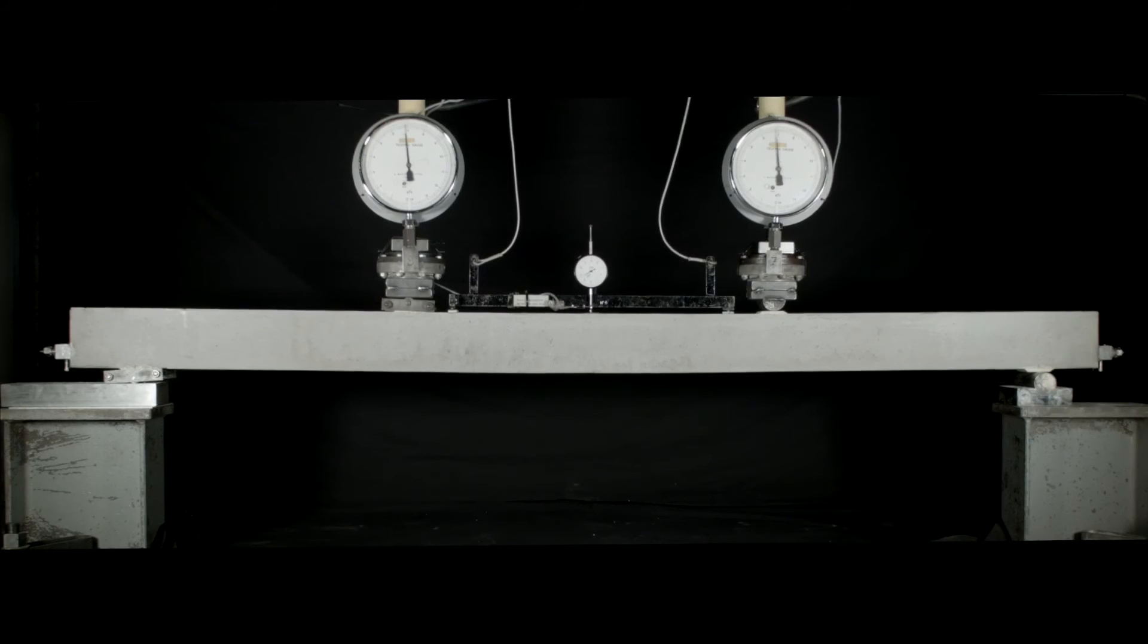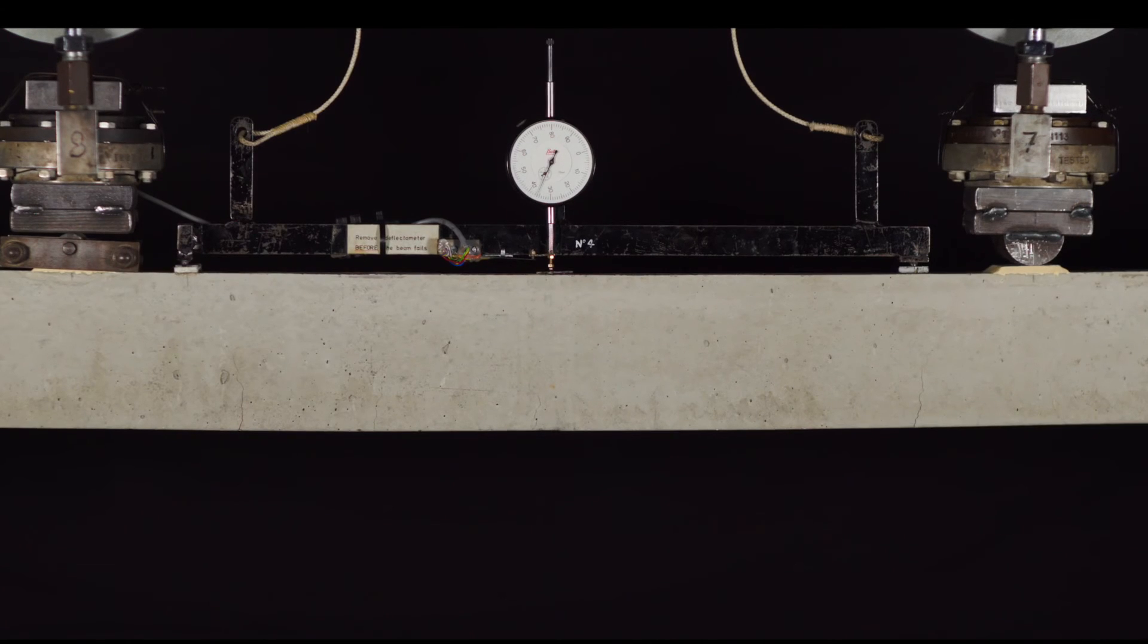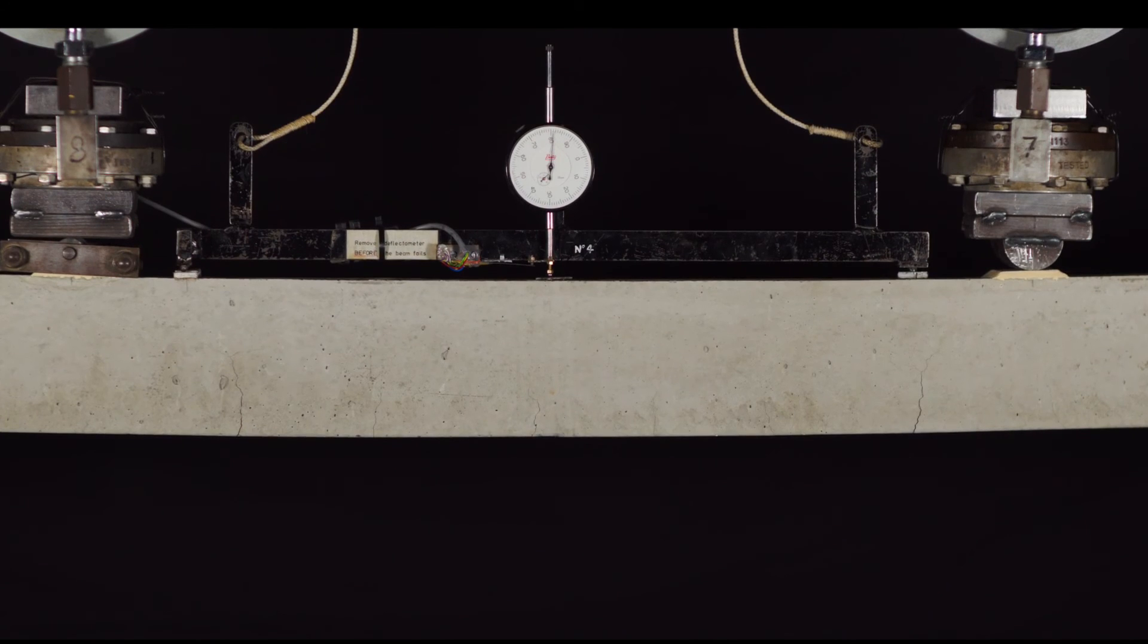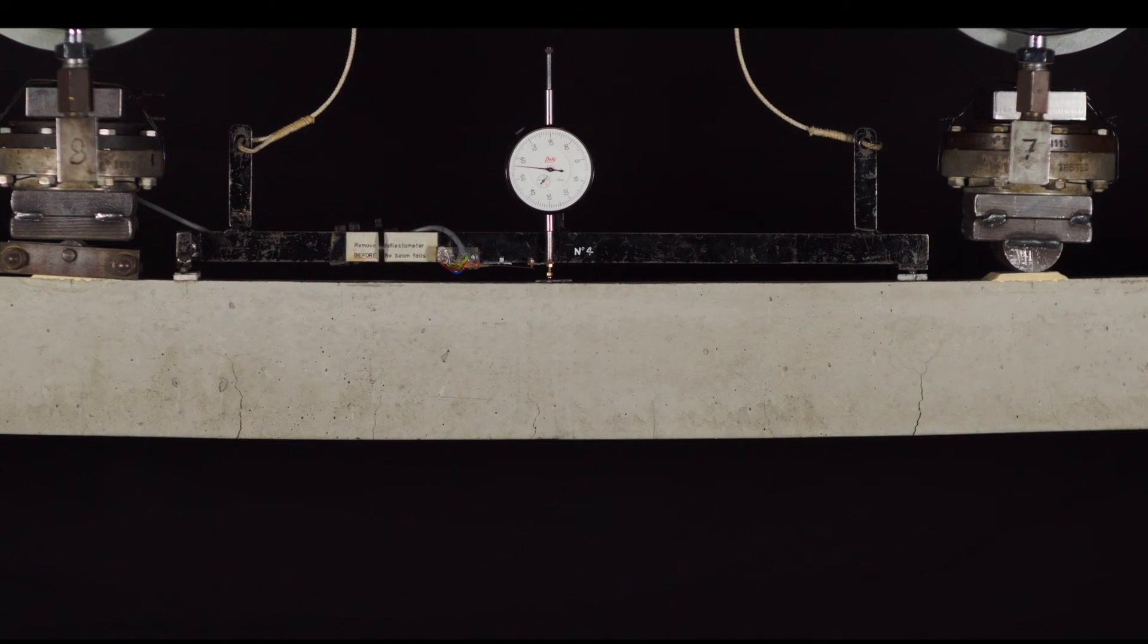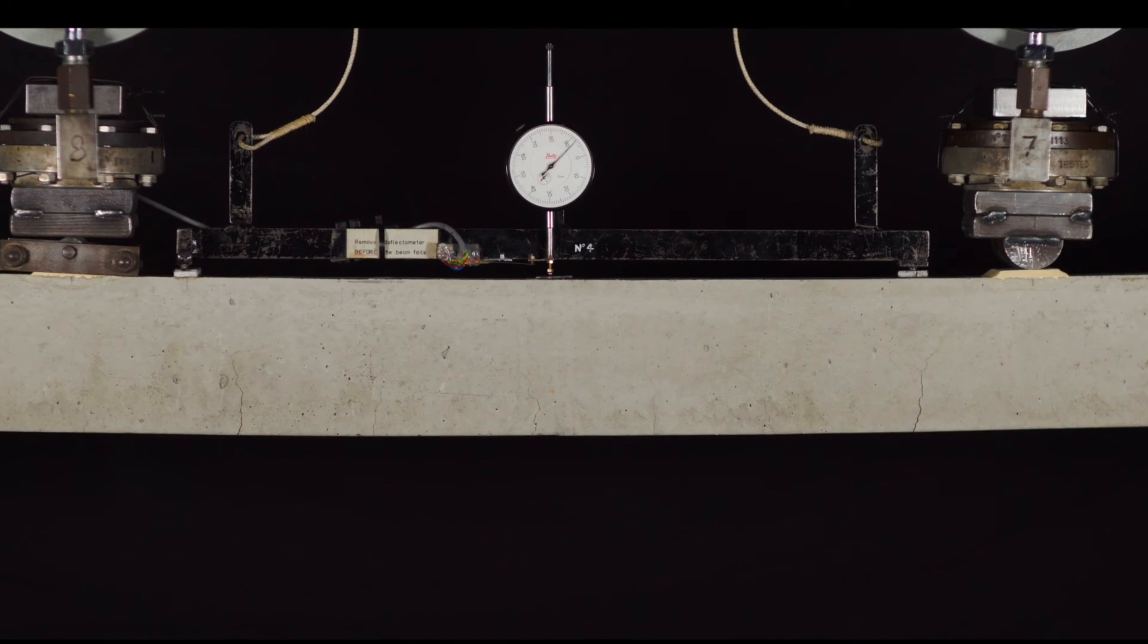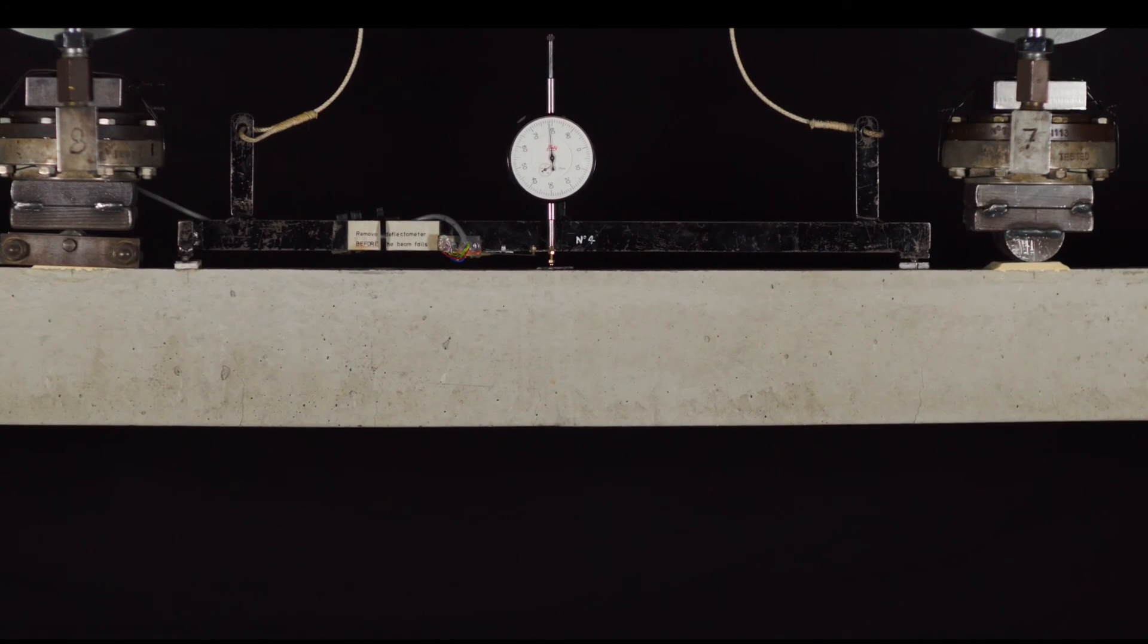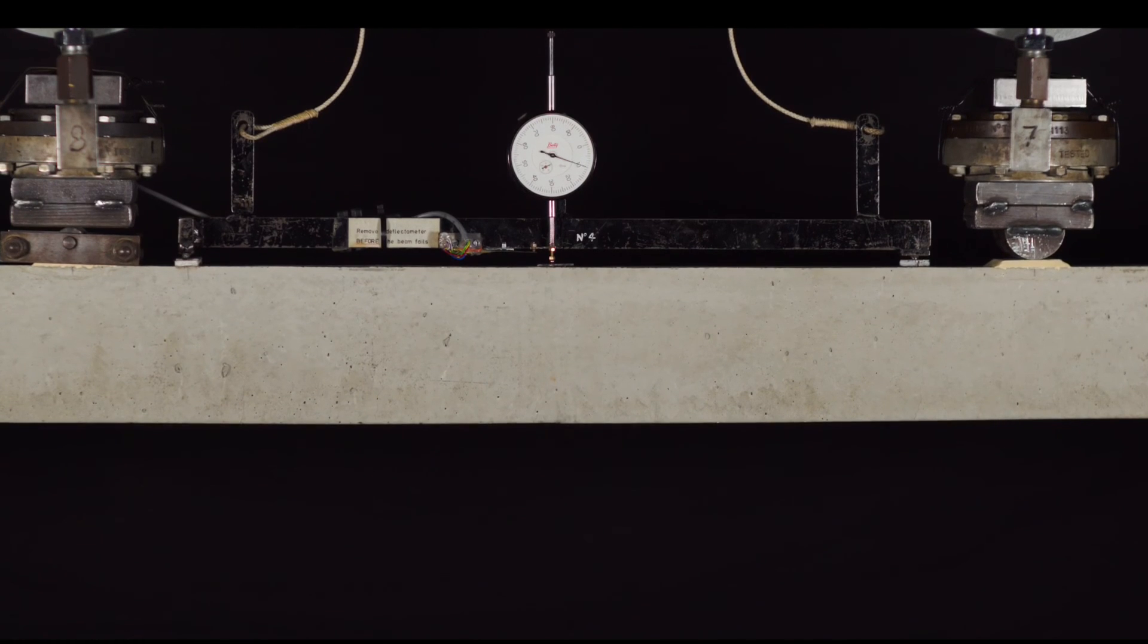we will start to get some cracks occurring in the concrete. And if we increase the load further, these cracks will grow. They will move from being micro cracks to being cracks that you can actually see. But even in those circumstances, we should be able to remove the load and the cracks will close up, and the beam will go back to being fully pre-stressed.